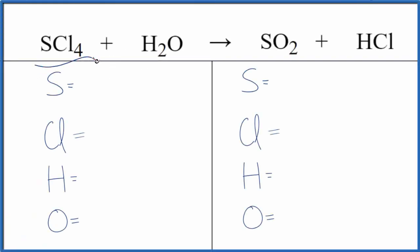Let's balance the equation for SCl4 plus H2O, giving us SO2 and HCl. Sulfur tetrachloride plus water yields sulfur dioxide plus hydrochloric acid.